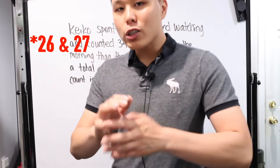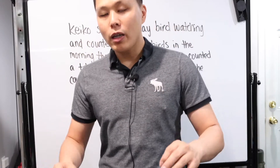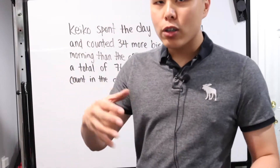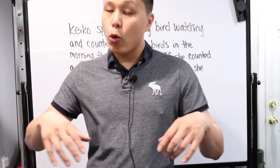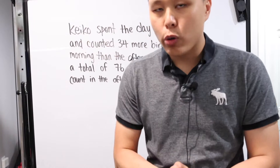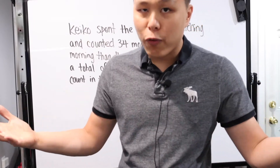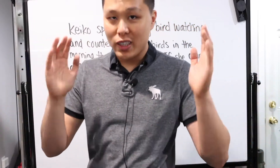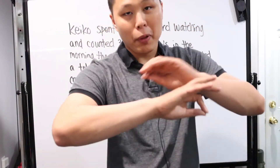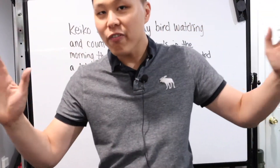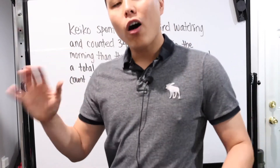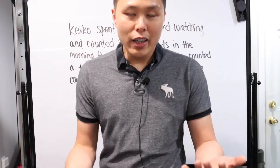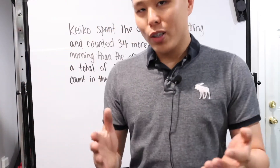Now here's the thing: problems 31 and 32 are plain and simple. They are standard — either create your equation problems, or they present an equation and you solve for the missing variable. Not too bad; there's an infinite amount of practice problems online, in books, whatever.